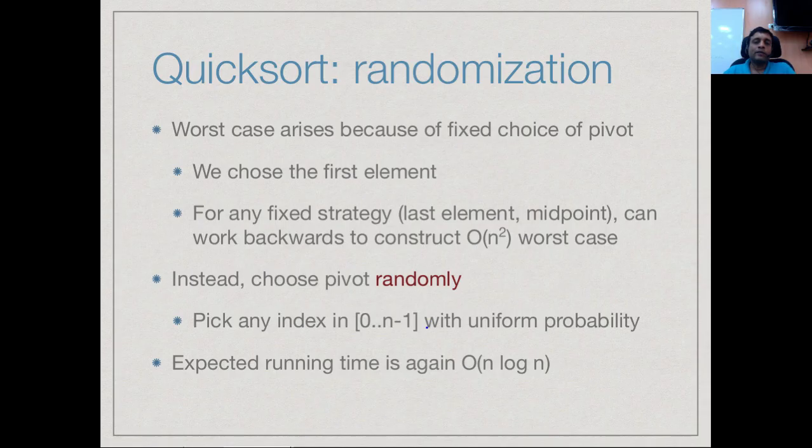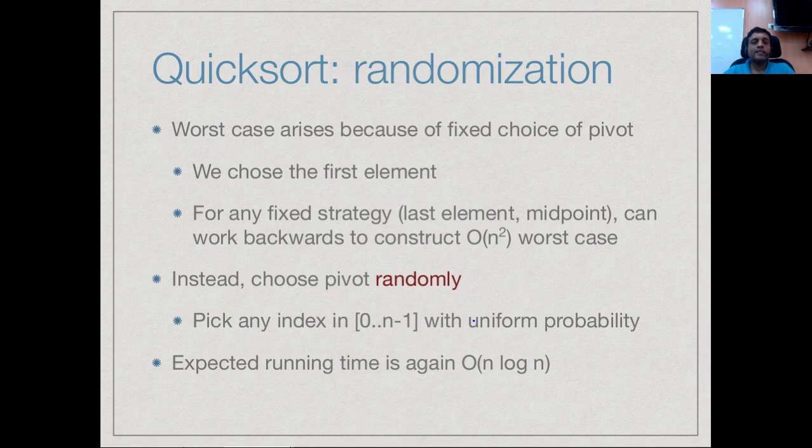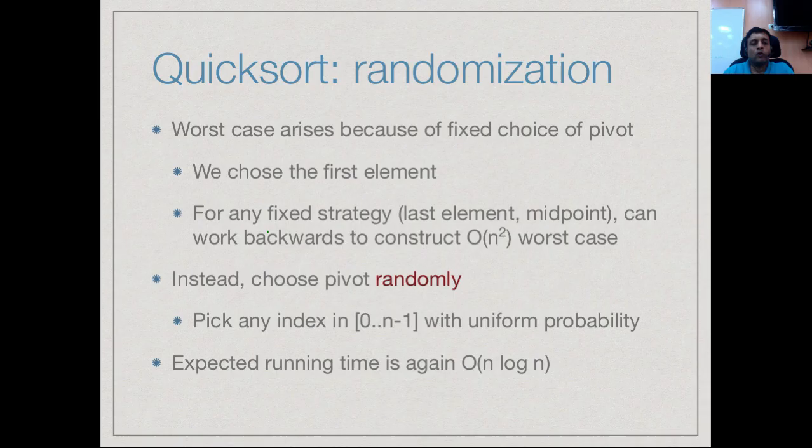On the other hand, you could take the last element and you would have the same problem. If you pick the midpoint, again you can make the middle point of the array that you start with the extreme element and you can then work backwards and construct always a worst case which takes order n squared. What we are saying is that for any fixed strategy, if I tell you in advance that I am always going to compute the position of the pivot in a fixed way, then by working backwards you can always ensure that at that position in the current problem you have a worst case and reconstruct something which will take O n squared for that strategy.